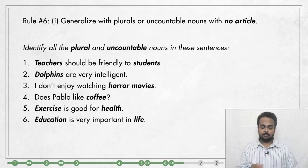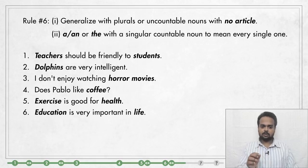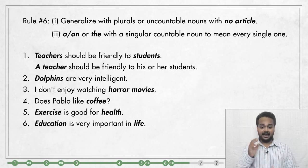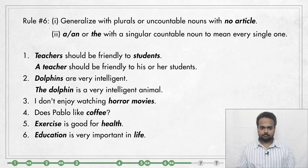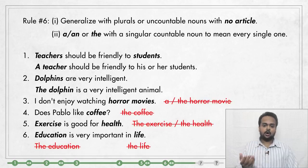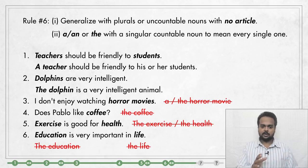With countable nouns, you can also generalize by using A or AN with a singular countable noun to mean every single member of a group. For example: a teacher should be friendly to his or her students — it's like saying every teacher. Or: the dolphin is a very intelligent animal — same meaning as dolphins, but meaning every dolphin. Remember this form — generalizing with A, AN, or THE — can only be used with singular countable nouns when we mean every single one. So you cannot say I don't enjoy watching a horror movie or the horror movie — here only the plural form is possible.